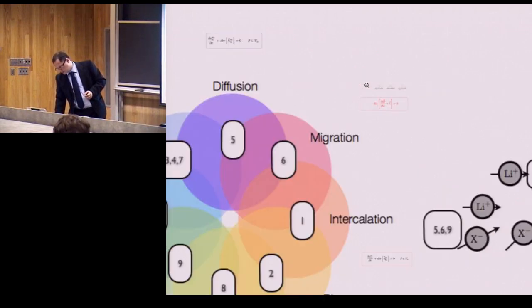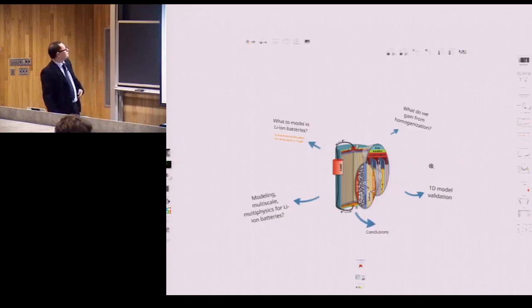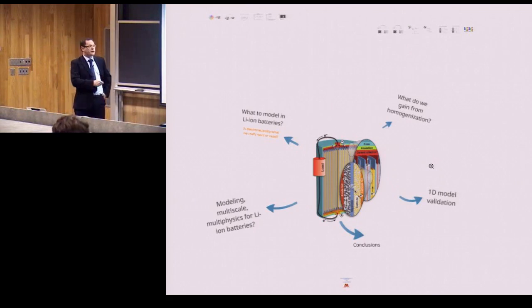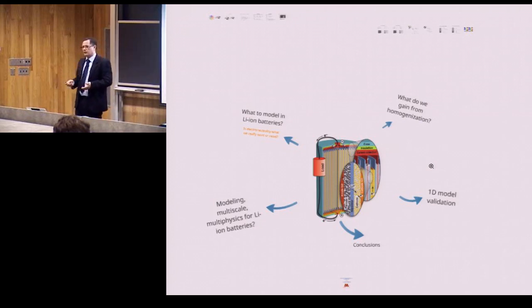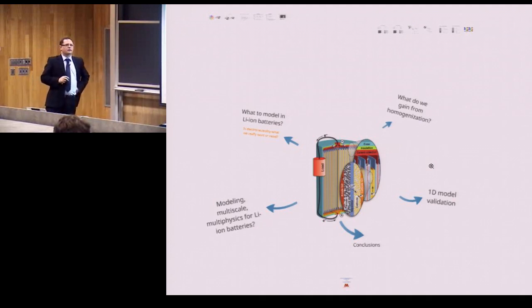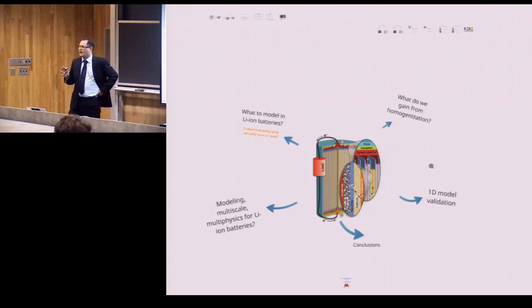The consequence of this description is that we are writing a new model essentially, so we need to validate it. We don't know if this new model is capable of describing well-known results or experimental evidences in batteries — that's why we need 1D modeling. I will not go through the 1D validation in detail, but at least I wanted you to know why we needed it.